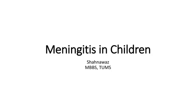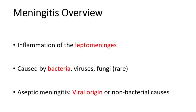Welcome to this video. This is an introduction to the main points about meningitis in children. Meningitis is an inflammation of the membranes that cover the brain and spinal cord, known as the leptomeninges. This inflammation can disrupt the normal function of the central nervous system. Meningitis can be caused by various pathogens, most commonly bacteria and viruses, while fungal causes are very rare.